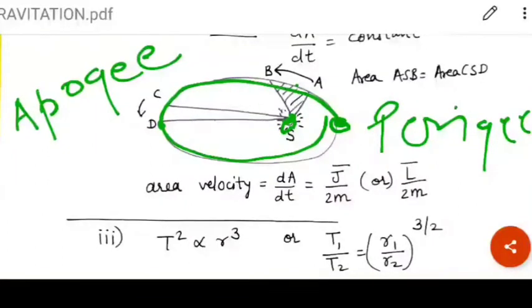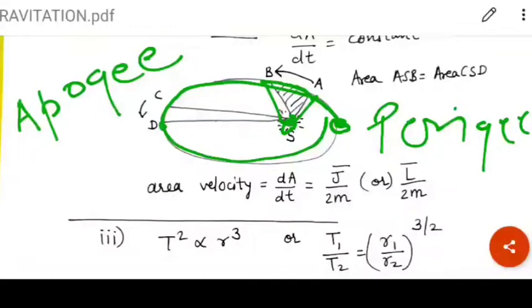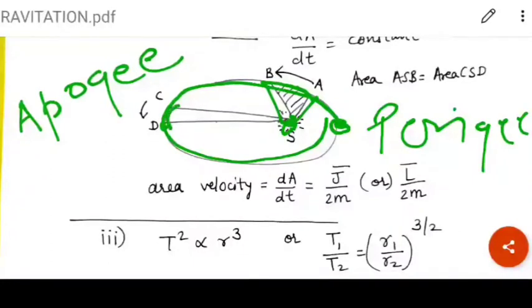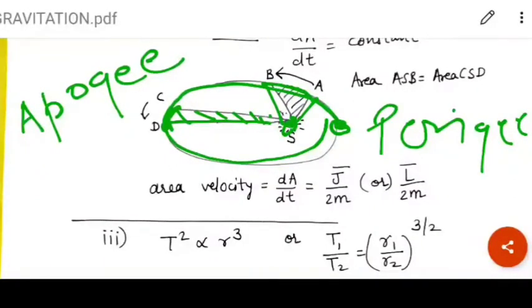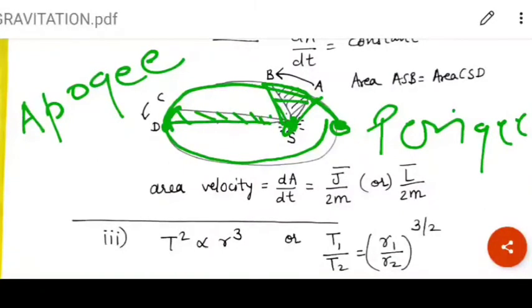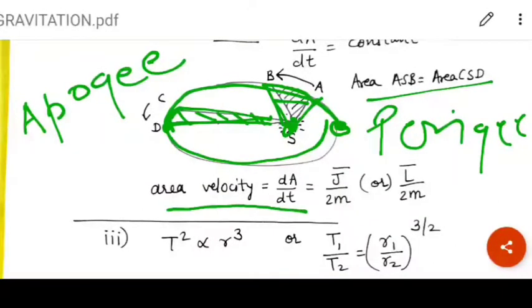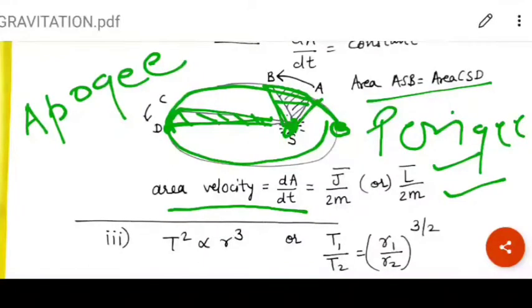At perigee, the velocity is maximum. Hence, the arc AB or the total area swept by the planet will be faster in less time. And as planet goes from C to D away from the sun, then it takes same time to cover this area. The area ASB and area CSD will remain constant according to the aerial velocity. This is equal to angular momentum divided by twice mass of the satellite.